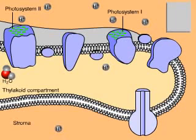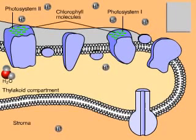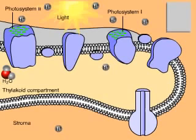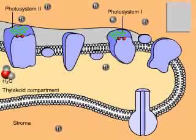The photosystems consist of arrays of chlorophyll molecules. Chlorophyll, the green pigment of leaves, absorbs light energy. The absorbed energy excites electrons to a higher energy level.